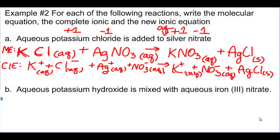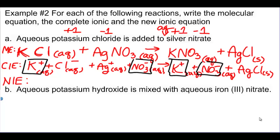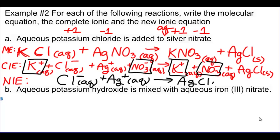That's the complete ionic equation. Now let's identify the spectator ions. K⁺ appears on both sides — it's a spectator ion. NO₃⁻ also appears on both sides — it's a spectator ion. We remove them from the equation. The net ionic equation — what's actually happening in this reaction — is: Cl⁻(aq) + Ag⁺(aq) → AgCl(s). Chloride ions combine with silver ions to make solid silver chloride. Everybody else is just hanging out in the container watching.